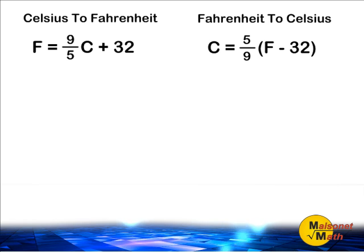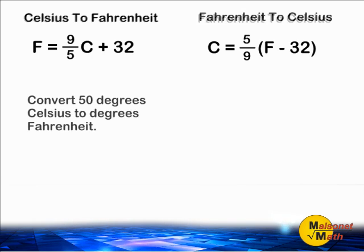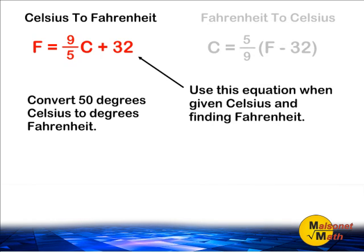The first thing we are going to do is practice converting Celsius to Fahrenheit. In this example, we have 50 degrees Celsius, and we want to convert that to degrees Fahrenheit. We must use the equation: Fahrenheit is equal to 9/5 of degrees Celsius plus 32 degrees.